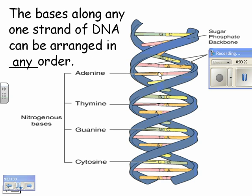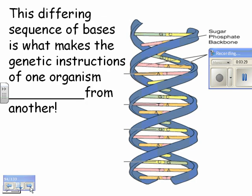Your order might be the same, but maybe instead of a T, you've got a C there or something. So this differing sequence of bases is what makes the genetic instructions of one organism different from another, which is why we all look a little different from each other and why we look very different from an oak tree.